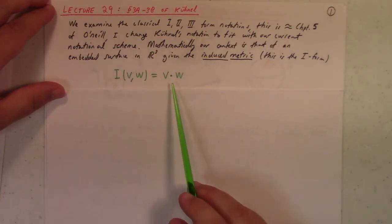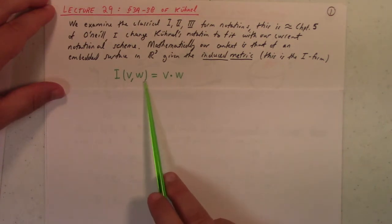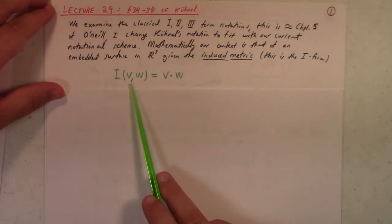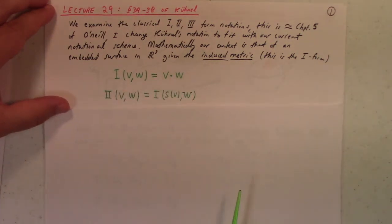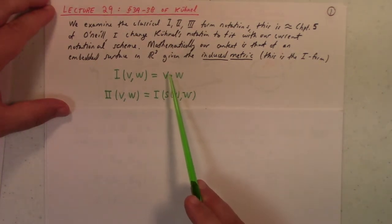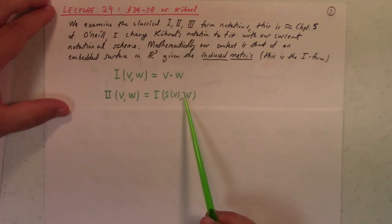The first fundamental form is just the dot product restricted to the surface, essentially. So here V and W are just tangent vectors to M. This is the first fundamental form, you could call it the induced metric also.